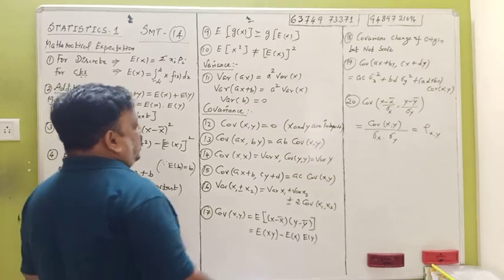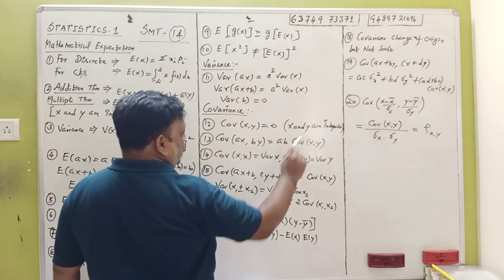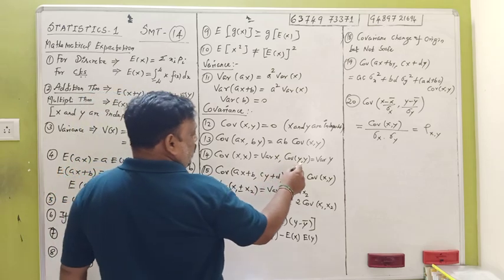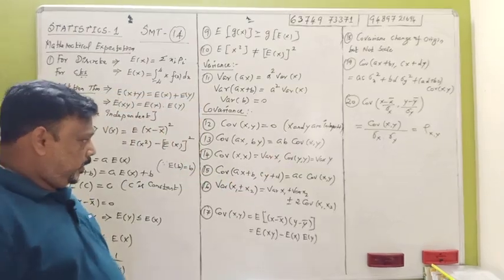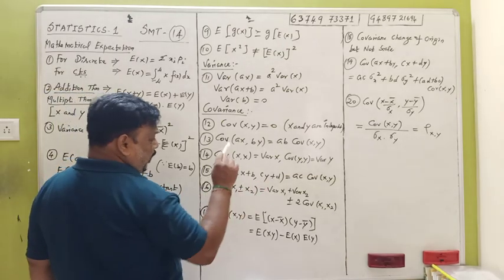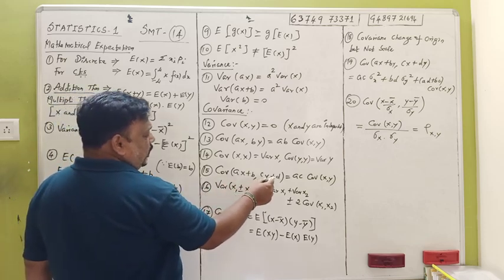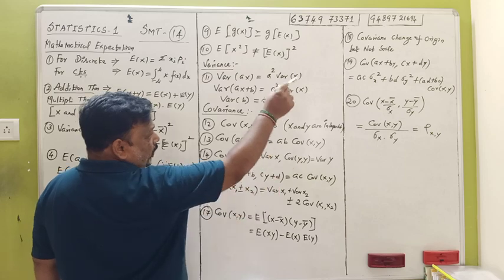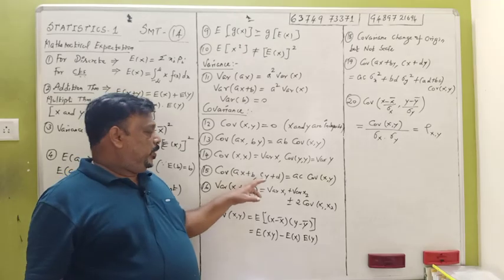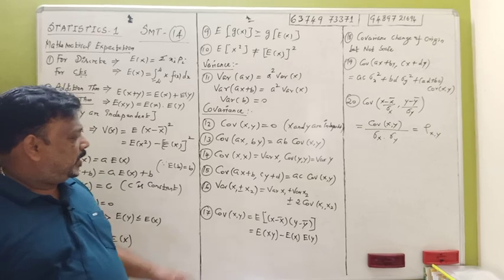The covariance of X, Y equals 0 when X and Y are independent. The covariance of aX, bY = ab · Cov(X, Y). The covariance of X, X equals the variance of X. The covariance of Y, Y equals the variance of Y. The covariance of aX + b, cX + d = ac · Cov(X, Y).